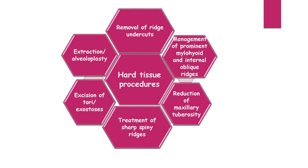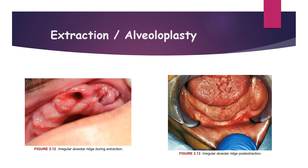The hard tissue procedures are: extraction or alveoloplasty, removal of ridge undercuts, management of prominent mylohyoid and internal oblique ridges, reduction of maxillary tuberosity, treatment of sharp spiny ridges, and excision of tori or exostosis.